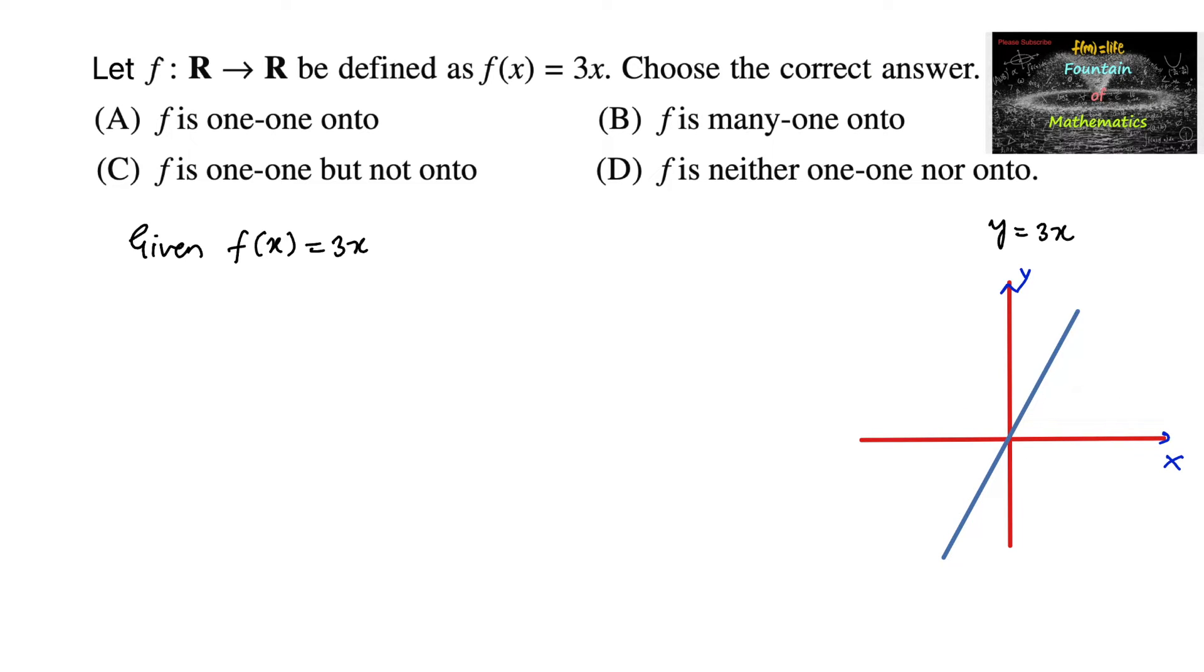And clearly we can see that by taking any horizontal line, it's parallel to x-axis. If I draw any line, it cuts at only one point. So by horizontal line test we can say that this function is 1 to 1.